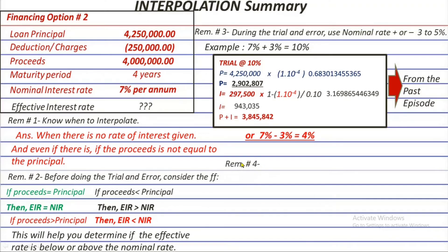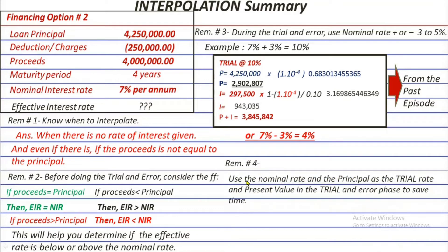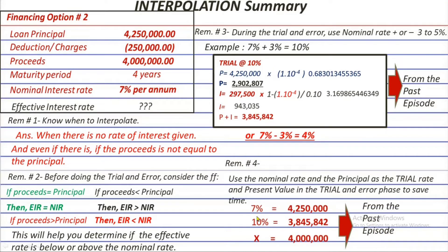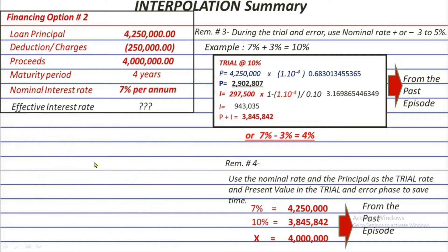Reminder number four: use the nominal rate and the principal as one of the trial rates and present values in the trial and error phase. This saves time because it has been proven that using the nominal rate to get the present value of the principal plus the present value of the interest will yield the principal amount as the present value. The two rates tried and their present values should be arranged with x on the third line as the effective rate, equal to the desired present value — in this problem, four million.